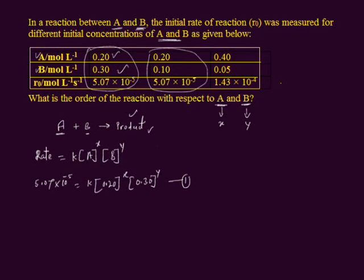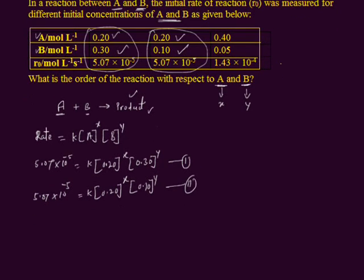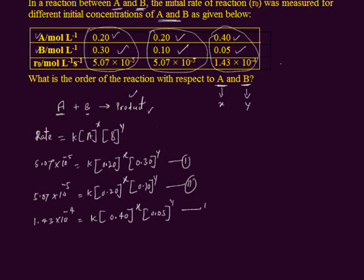Similarly, for the second data, the rate of reaction is 5.07 × 10⁻⁵, equal to K times 0.20 raised to the power X times 0.10 raised to the power Y. We label this the second equation. Now for the third data, the rate of reaction is given as 1.43 × 10⁻⁴, equal to K times 0.40 raised to the power X times 0.05 raised to the power Y. We label this the third equation.